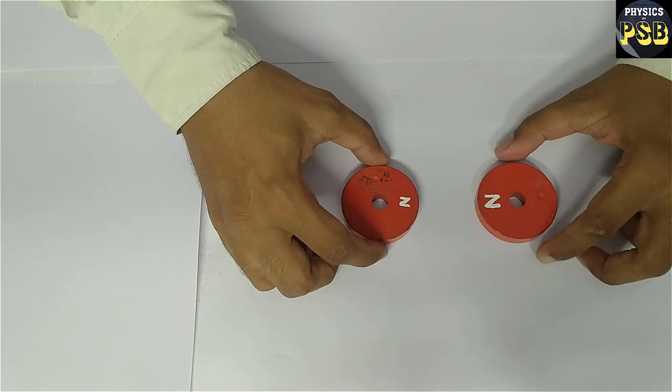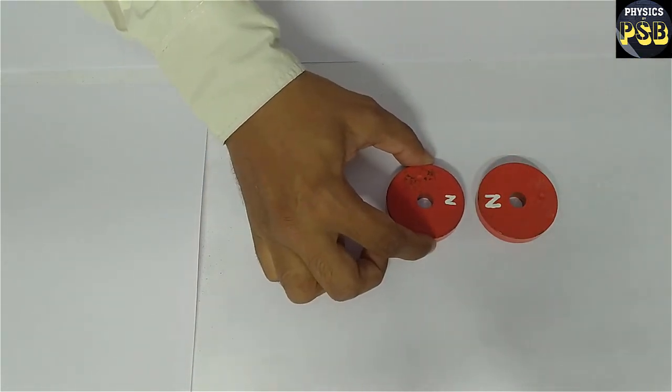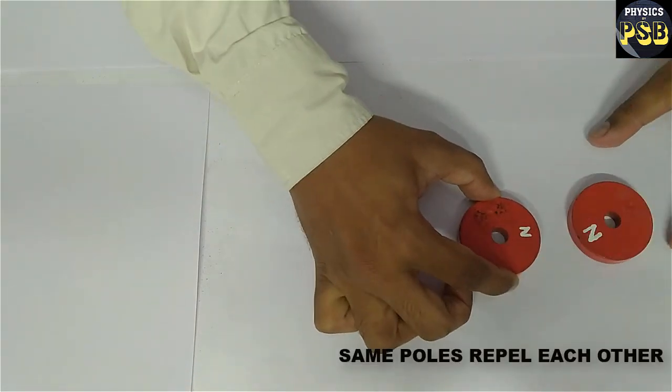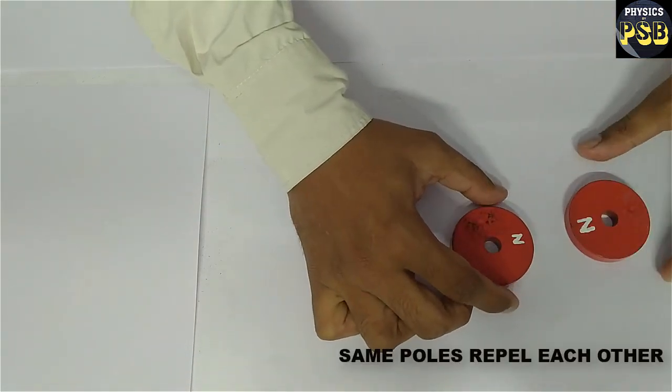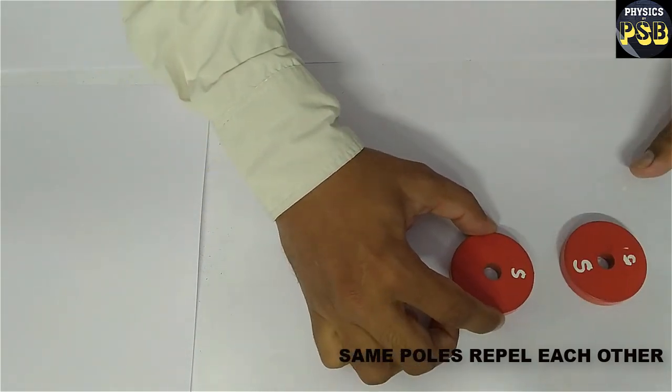When north pole of a magnet is brought near to the north pole of another magnet, we know they repel. In a similar way, when we bring the south pole of a magnet near to the south pole of another magnet, they also repel.